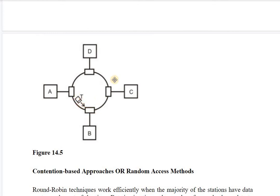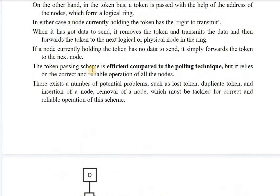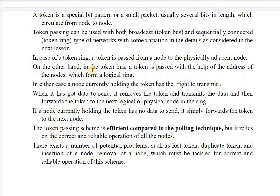The token revolves in the ring. Whichever computer has the matching destination address acquires the token, detaches the data, and circulates the token again with an acknowledgement. When the token returns to the source computer, it sees the acknowledgement that data was delivered. Token passing can be implemented with token ring as well as token bus.